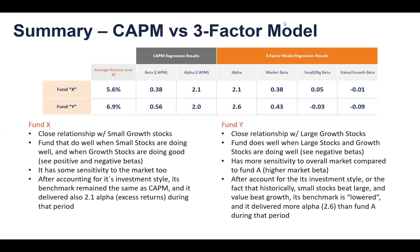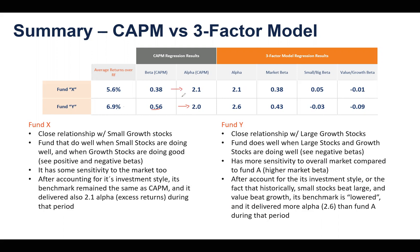As you can see, we have average returns over the risk-free asset. It looks like Fund Y delivers more returns than Fund X. However, we need to account for risk. When you look at the CAPM regression results, Fund Y has a higher beta, so it requires greater risk. Its benchmark is therefore higher, and the alpha — the excess returns over this benchmark — is a little bit lower because of this higher required return.